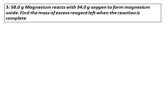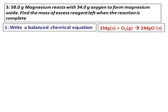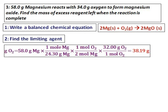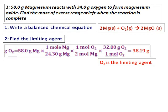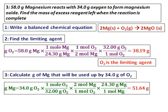58 grams of magnesium reacts with 34 grams of oxygen and forms magnesium oxide. This question asks us to find the excess reagent left behind. As always, write a balanced chemical equation first: magnesium reacts with oxygen to give magnesium oxide. Then find the limiting agent. With 58 grams of magnesium, the amount of oxygen needed is 38.19 grams. I have only 34.0 grams of oxygen, and hence oxygen is the limiting agent. This means magnesium will be left behind, so we calculate how much magnesium reacts completely with 34.0 grams of oxygen.